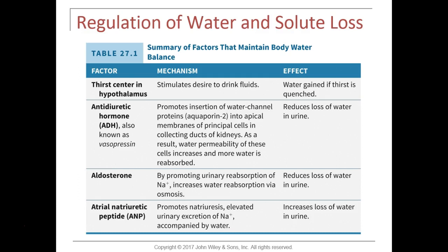Antidiuretic hormone acts on the kidneys, specifically at the end of the distal convoluted tubule and in the collecting ducts. It causes the principal cells there to incorporate aquaporin 2 channels, making those cells more permeable to water. ADH causes these cells to reabsorb more water, decreasing urinary output but increasing blood volume and helping maintain blood pressure.